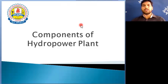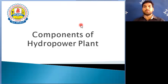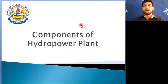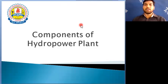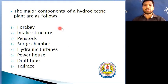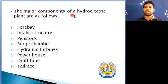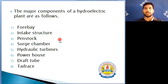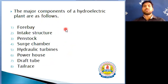As we all know, a hydropower plant is a structure which is used to generate electricity with the help of water, where the water is conveyed from high head to low head with the help of a conduit, and a turbine is rotated which is coupled with a shaft and generator. The major components are: forebay, intake structure, penstock, surge chamber, hydraulic turbine, powerhouse, draft tube, and tailrace.